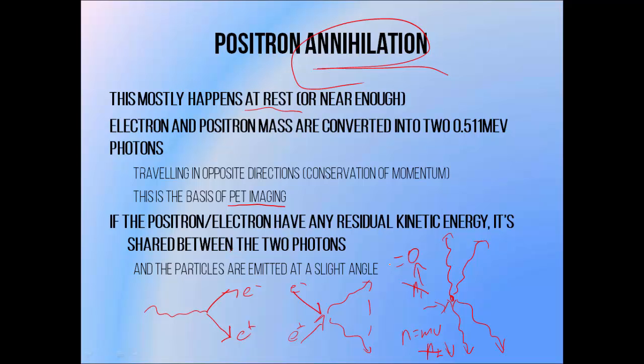The basic process involves using the detection of annihilation photons in order to locate radioactive material within a patient. A PET scanner is basically a ring of radiation detectors. When a positron annihilation occurs inside the ring, it will emit photons in exactly opposite directions. When two photons are simultaneously detected by the ring, we are able to determine that a positron annihilation has taken place somewhere along the line connecting the two, allowing us to determine the approximate location of positron-emitting radioisotopes within the body.